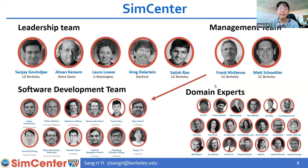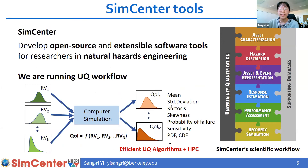We also distribute our research applications to the public so that users can easily access these resources using intuitive graphical user interfaces. Our professor Sanjay Govindjee is our director of the center and we are the software development team, led by Dr. Frank McKenna. All the programs we develop are based on close interaction with domain experts who advise us on directions. The tools we develop are open source and extensible software tools for researchers in natural hazard engineering.